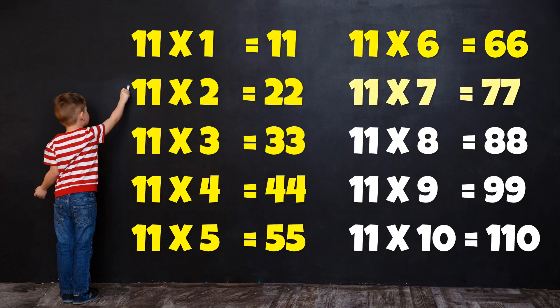11 7s are 77, 11 8s are 88, 11 9s are 99, 11 10s are 110.